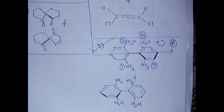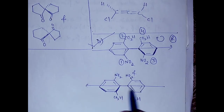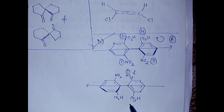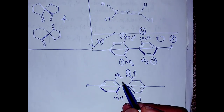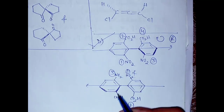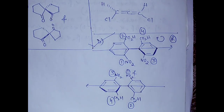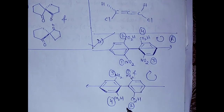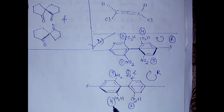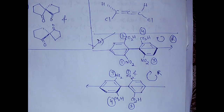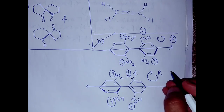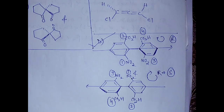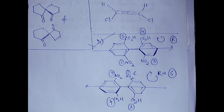Now come to the other end. Again, pass the axis from the planar side. This is 1, this is 2, now come here — this is 3, and this is 4. So 1, 2, and 3 are clockwise, which would give R, but the fourth group is above the plane, so you have to reverse the configuration. That means we have S configuration here. So one center is R and the other is S — they are enantiomers.